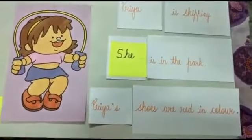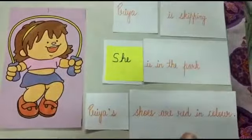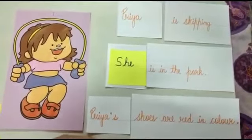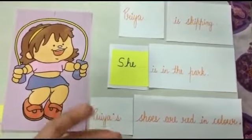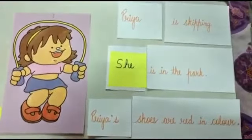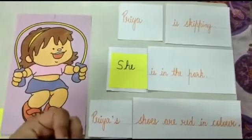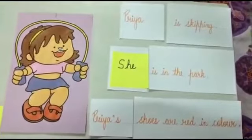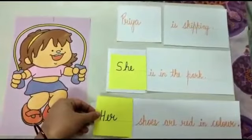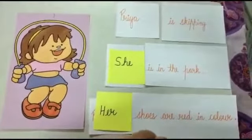Now come to the third sentence: Priya's shoes are red in color. Now children, here if you will see, we are talking about the personal belongings of Priya — something which she has of her own. So remember, when we talk about a person's personal belongings or personal attributes, for female we use the pronoun her. Her shoes are red in color. So the pronouns she and her are used for the female gender.